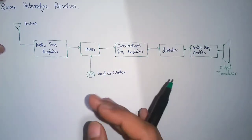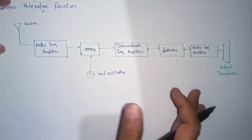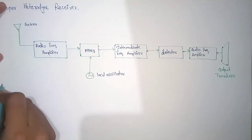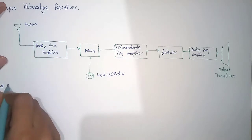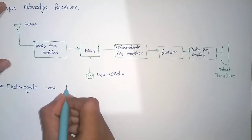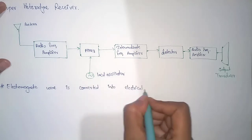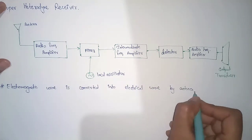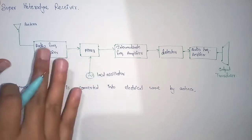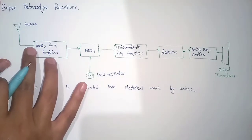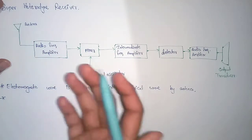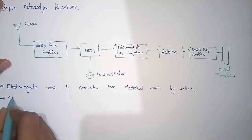Everything will be written in sentences, so let's write the sentences which will explain what is happening in each block. At the first step, the antenna is converting the electromagnetic waves into an electrical wave. The electromagnetic wave is converted into an electrical wave by the antenna. The antenna receives all frequency signals.